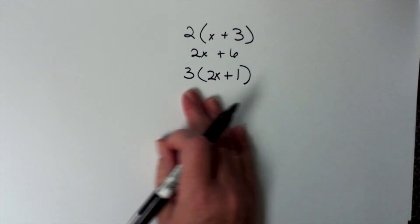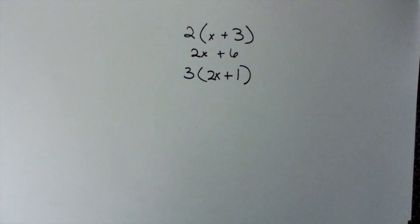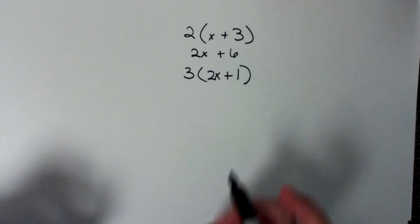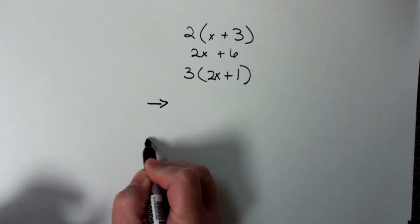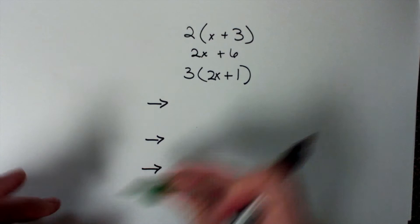So three groups of 2x plus 1. Group 1, group 2, group 3. Ready?